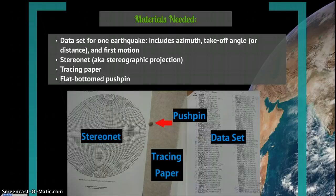And if the first motions are not given, they can be found by looking at the individual waveforms on the seismograph and noting whether the wave travels up or down when it first arrives.